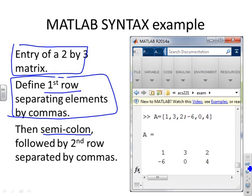Here's the code then. If you look, what do you notice? First of all, I've entered the elements of the first row separated by commas: one comma three comma two. Then I put a semicolon, and then I put the elements of the second row separated by commas. And round it all I use these square brackets.